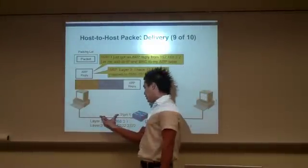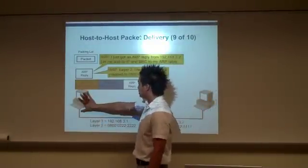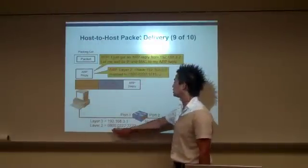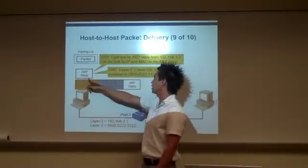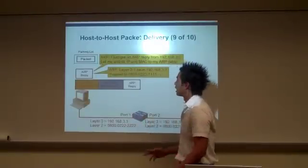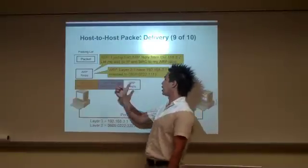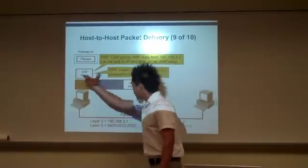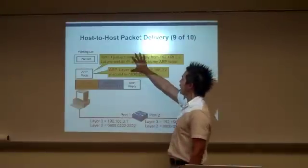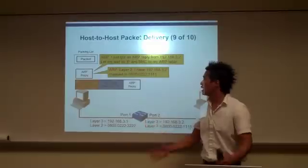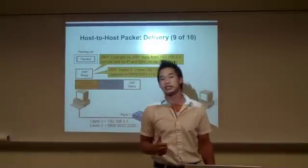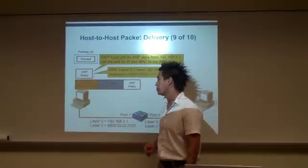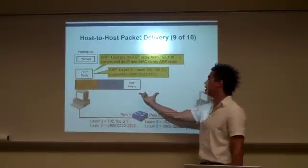Once that happens, the frame is sent down through the physical layer as ones and zeros. As the original source, when I receive this frame I check the destination MAC address — it is for me — so I de-encapsulate. What I am left with is just the ARP reply. Address Resolution Protocol says I need to map the source MAC address to the destination IP of 3.2. Once that ARP issue is resolved, I take from the parking lot my layers 7, 6, and 5 application data along with the UDP header, source IP, and destination IP, and encapsulate them into the full frame.